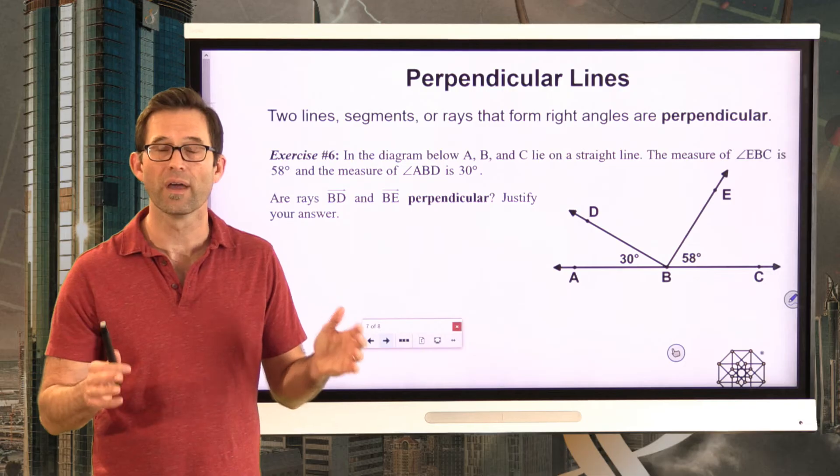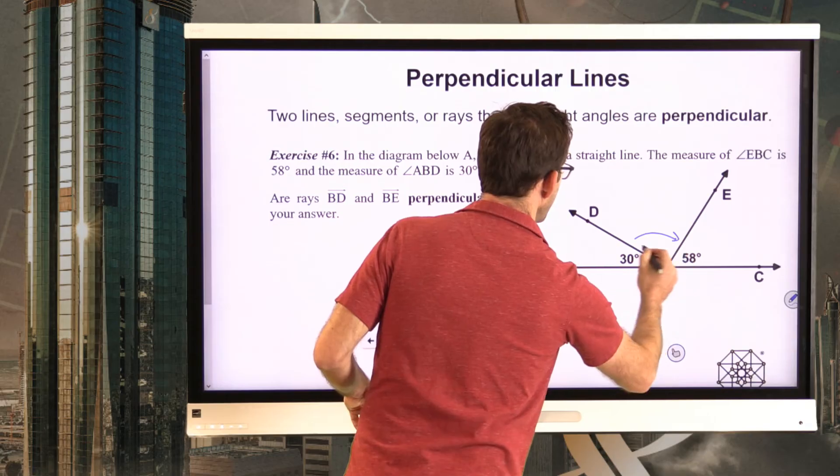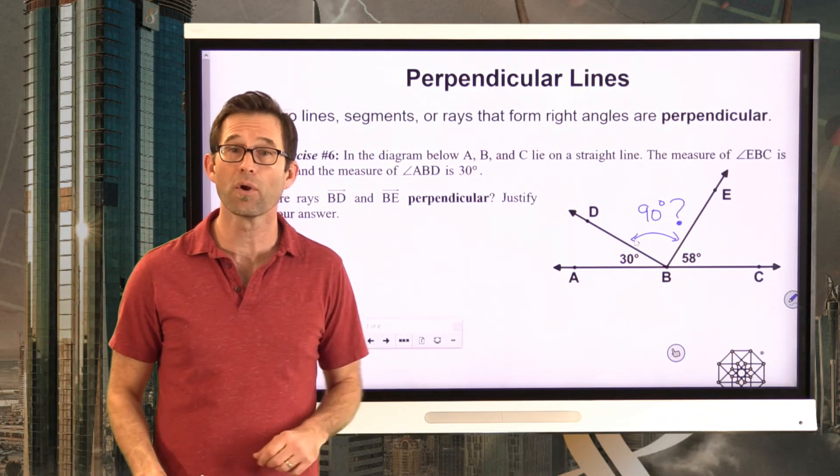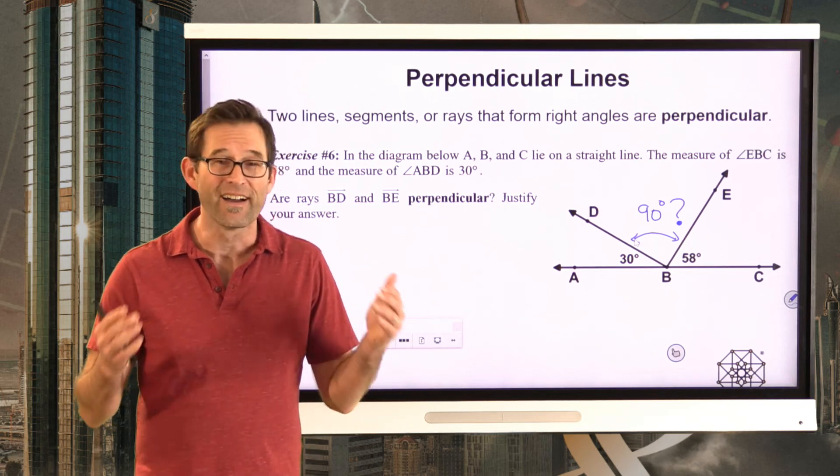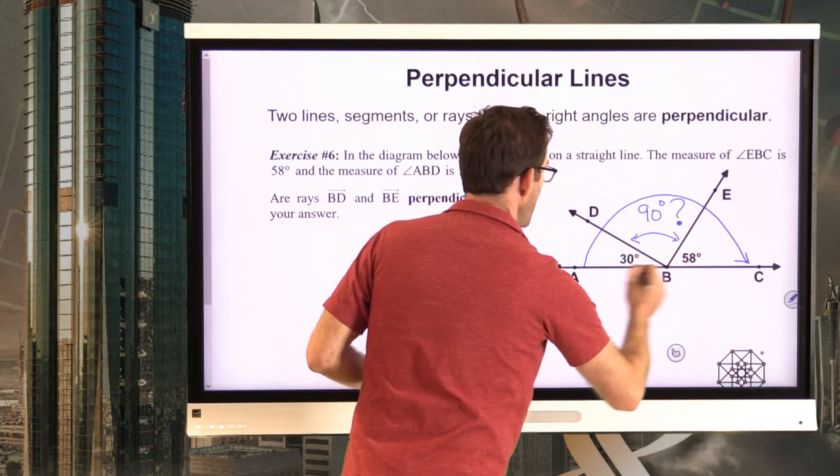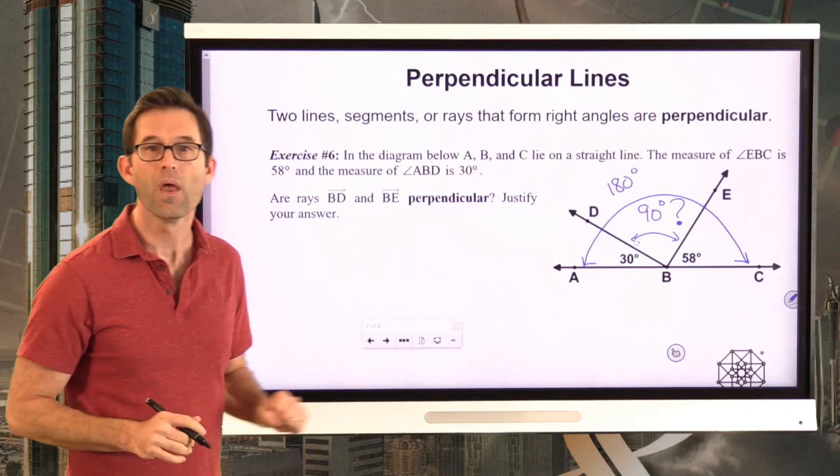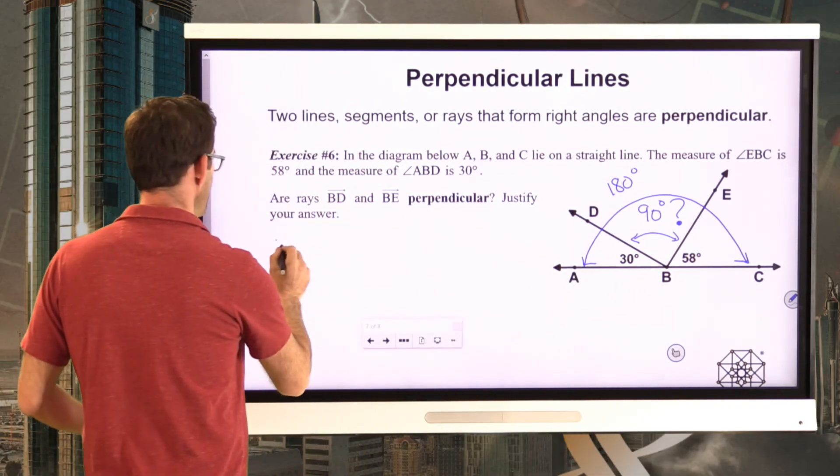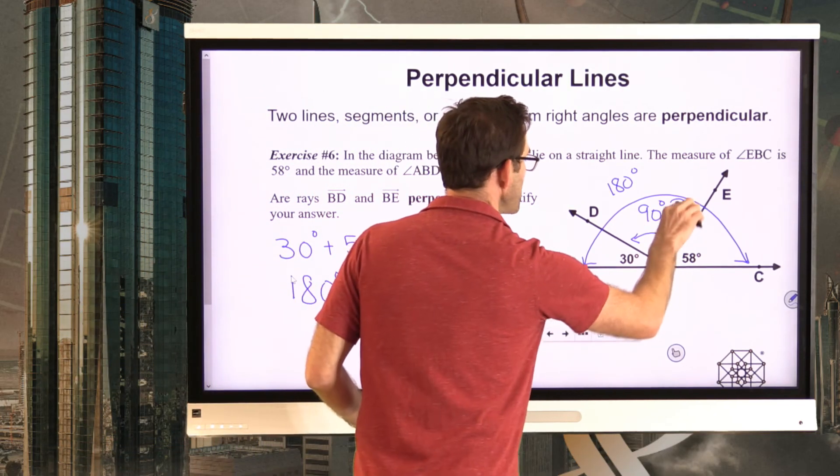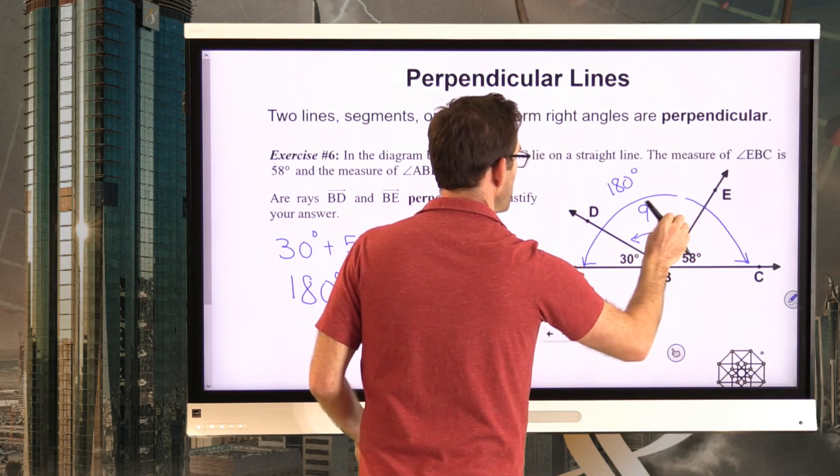Well, ultimately speaking, what we're really asking is, is this angle in here, is this a right angle? I'm going to put a question mark after it. It sure looks like it could be a right angle. Well, it does. It looks like it could be a right angle. The question is, how do I know for certain? Well, again, so important that A, B, and C lie on a straight line. Because A, B, and C lie on a straight line, we know that this entire angle must be 180 degrees. It's a straight angle. So, I can now add 30 and 58. Let me just do this obviously on the side of my paper. 30 degrees plus 58 degrees is 88 degrees. I can now take my 180 degree straight angle and subtract off 88 degrees. And I would find that that's 92 degrees.